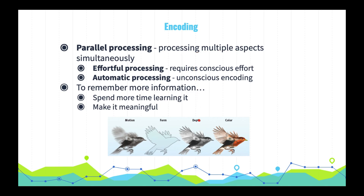Our brains are capable of parallel processing, or processing many aspects of a problem at the same time. You might engage in effortful processing — encoding that requires conscious effort — if you're trying to learn some new vocab words. But the fact that you might also remember the layout of the page in your notebook where a vocab word was written is evidence of automatic processing, or unconscious encoding of information.